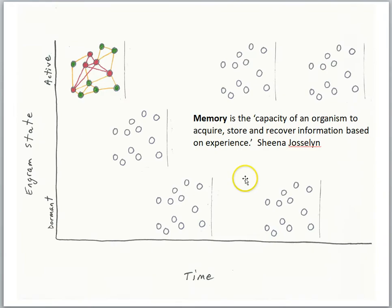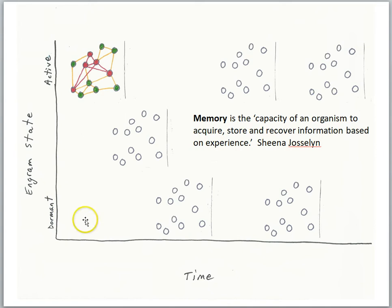That plasticity is mediated by protein products, which are the result of gene expression. In this first lesson of the series, we'll take a look at the time course of an engram, from its formation to its persistence. First, some definitions: memory is the capacity of an organism to acquire, store, and recover information based on experience. We're going to use a diagram to help us follow the history of an engram. The engram state will distinguish two states: an active state and a dormant state, plotted over time.